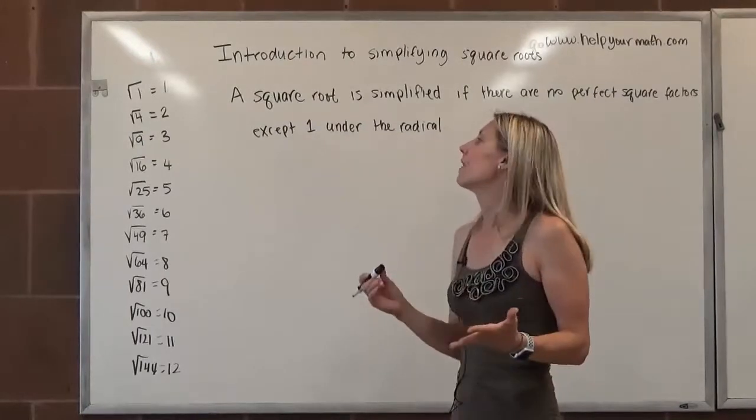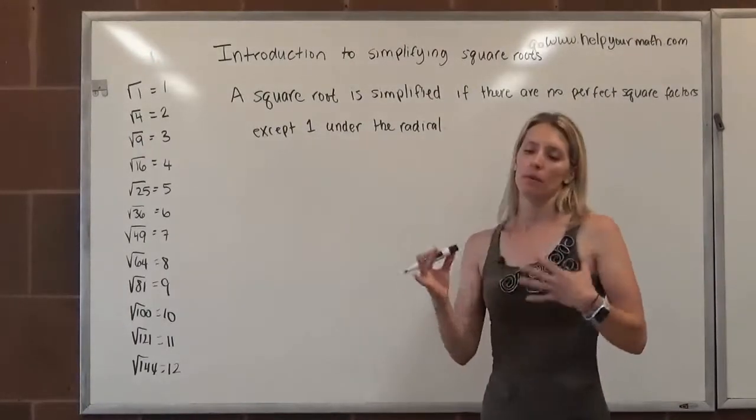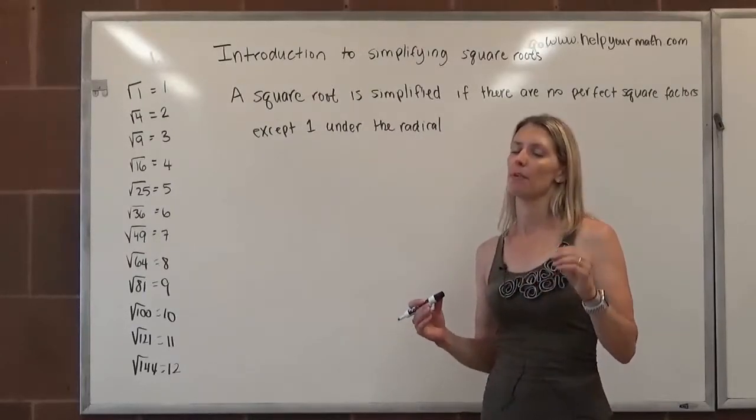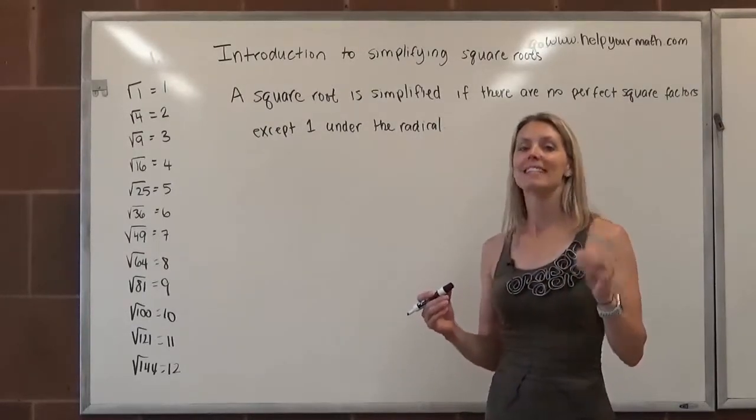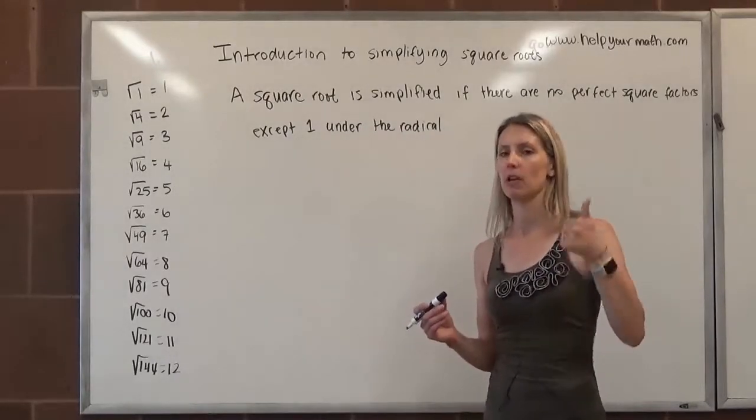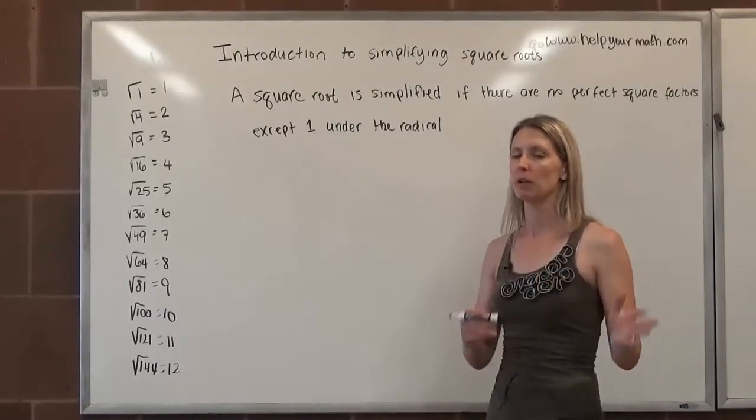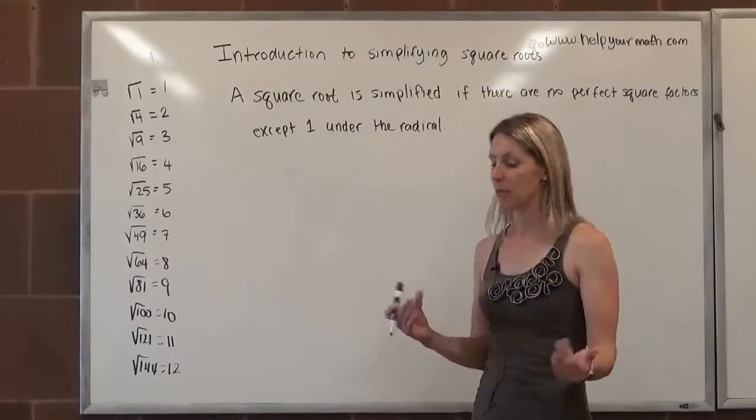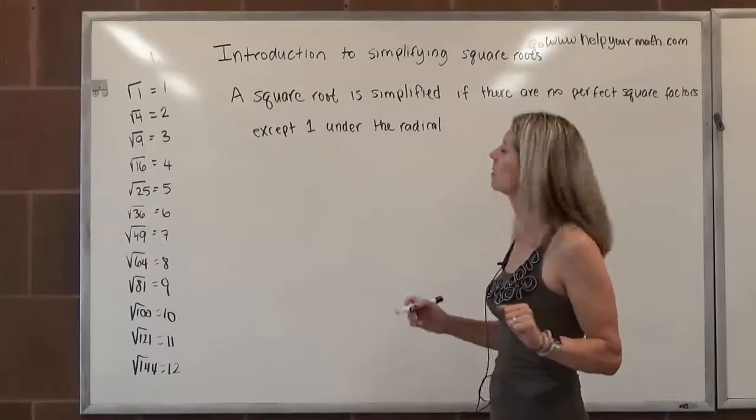A good rule of thumb, just something to keep in mind when we're looking at this. If we assume that if we're given a variable that the variable is positive and sometimes you're going to see that written in the instructions. It's going to say assume all variables are positive. When it says that, that's good news because we don't have to worry about any weird special cases. If it doesn't say that, then you need to be careful. But for now we're going to assume that it is positive.